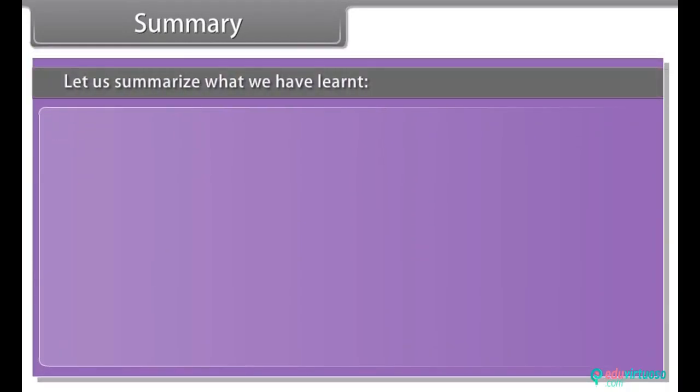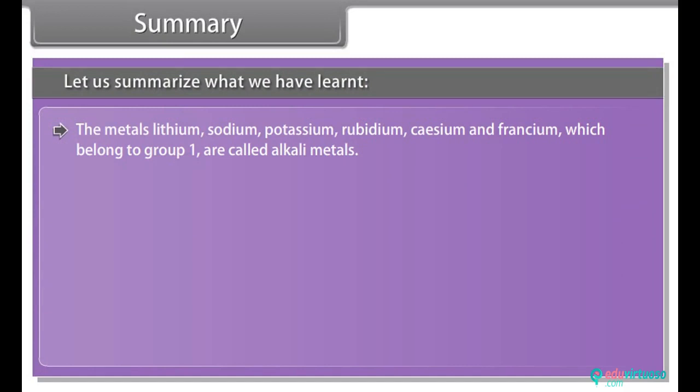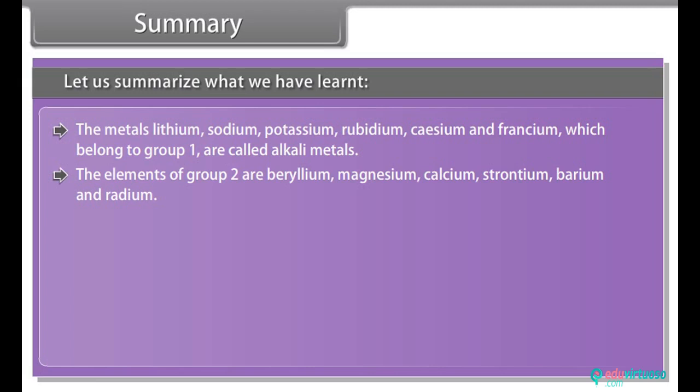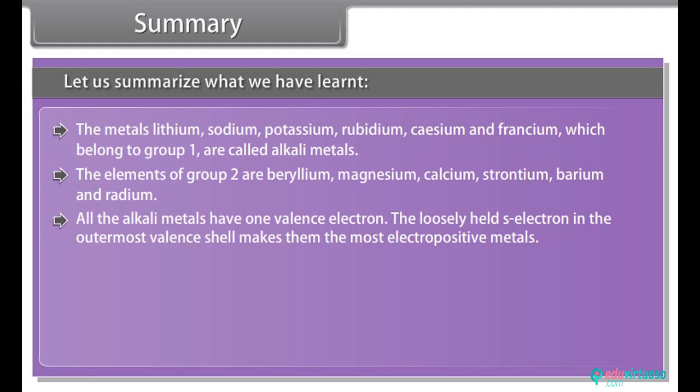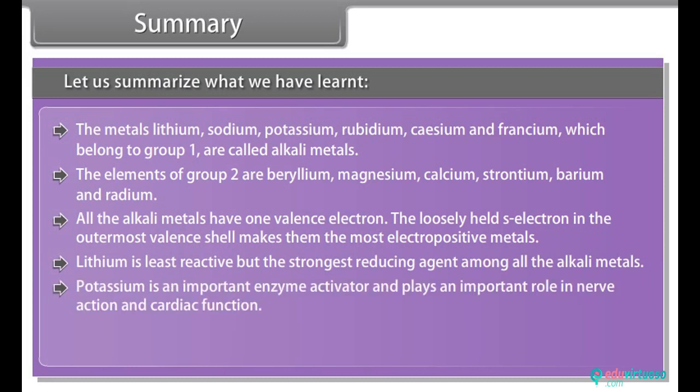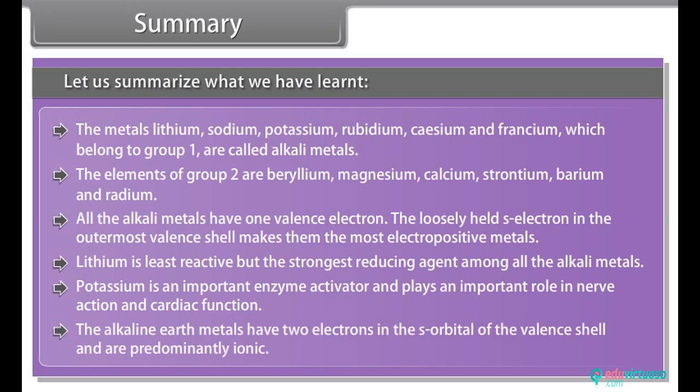Let's summarize what we have learned: The metals lithium, sodium, potassium, rubidium, cesium, and francium, which belong to group 1, are called alkali metals. The elements of group 2 are beryllium, magnesium, calcium, strontium, barium, and radium. All the alkali metals have one valence electron. The loosely held s-electron in the outermost valence shell makes them the most electropositive metals. Lithium is least reactive but the strongest reducing agent among all the alkali metals. Potassium is an important enzyme activator and plays an important role in nerve action and cardiac function.